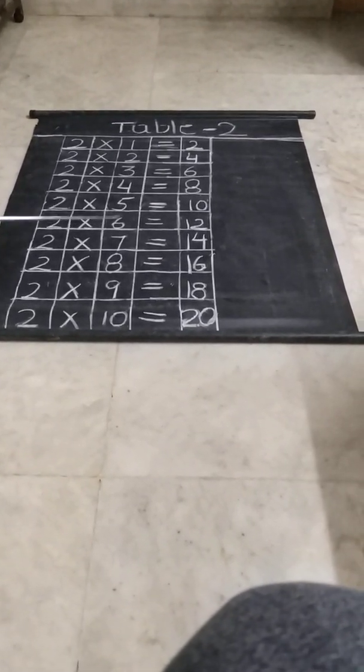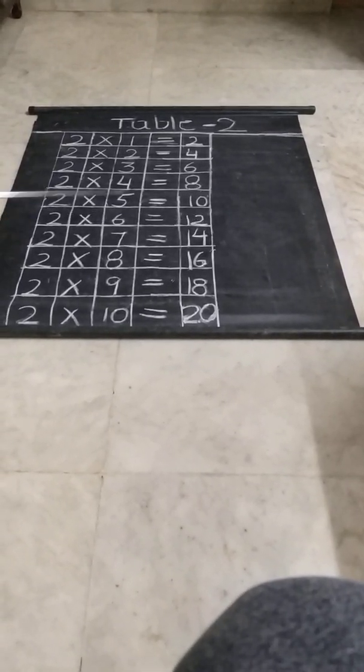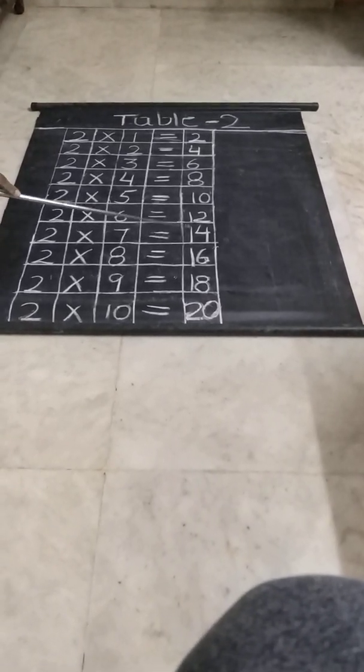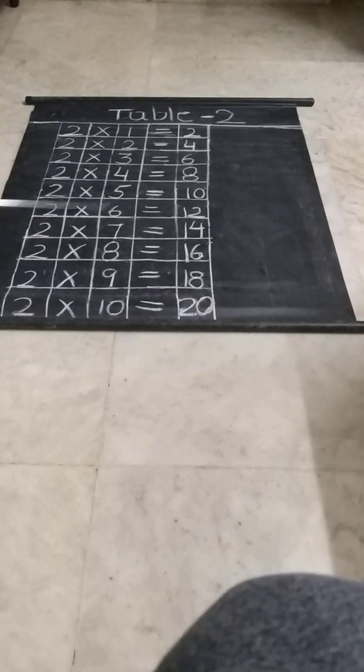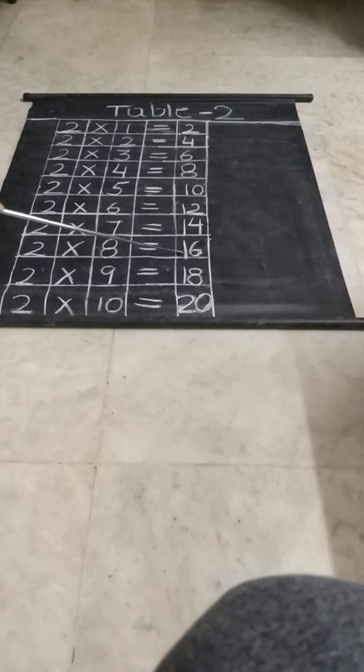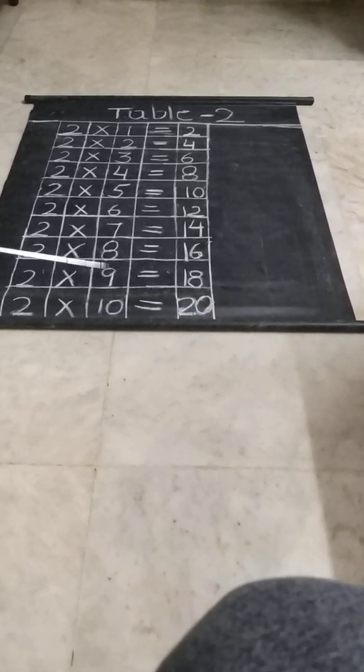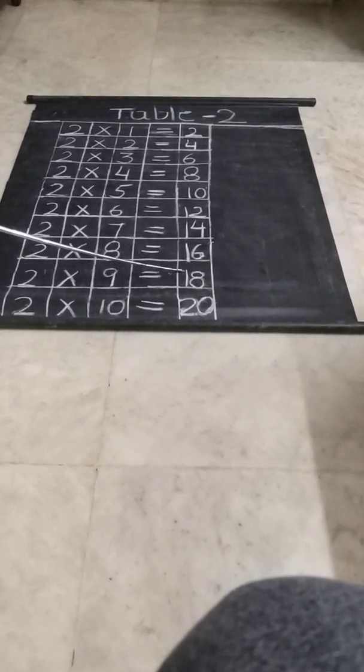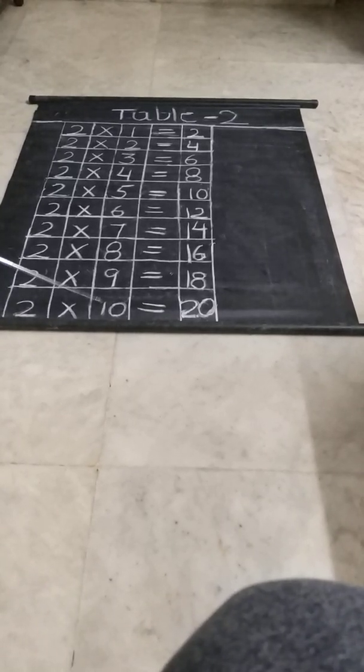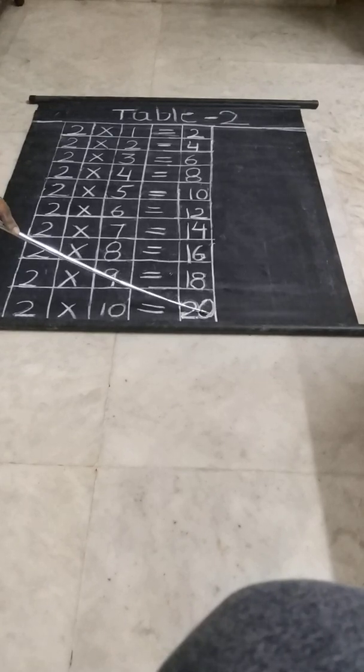2 into 6 is equal to 1-2, 12. 2 into 7 is equal to 1-4, 14. 2 into 8 is equal to 1-6, 16. 2 into 9 is equal to 1-8, 18. 2 into 10 is equal to 2-0, 20.